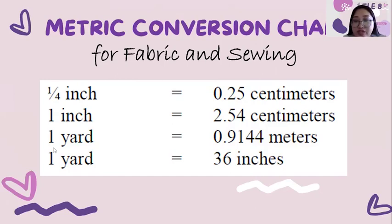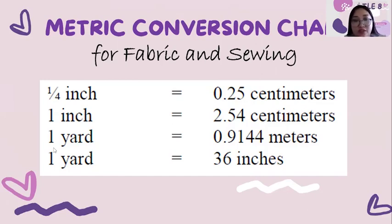This is the metric conversion chart for fabric and sewing. 1/4 inch is equal to 0.25 cm, and 1 inch is equal to 2.54 cm. 1 yard is equal to 0.9144 meters, and 1 yard is equal to 36 inches.